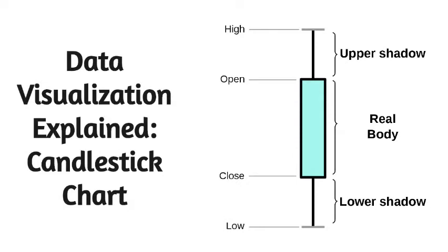The main rectangle in the symbol is known as the real body, which is used to display the range between the open and close price of that time period. While the lines extending from the bottom and top of the real body are known as the lower and upper shadows. Each shadow represents the highest or lowest price traded during the time period represented.